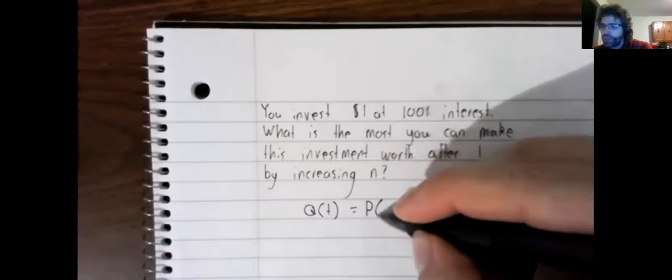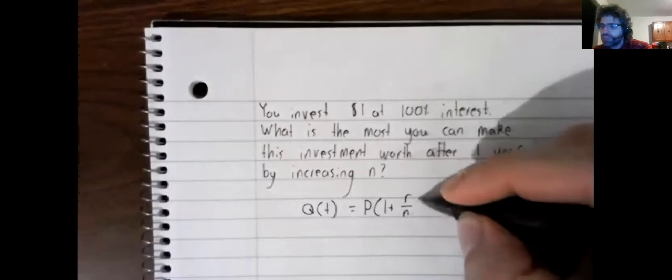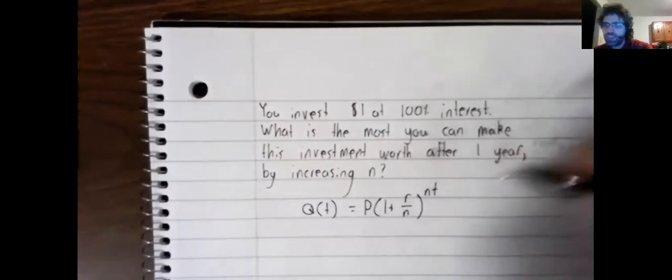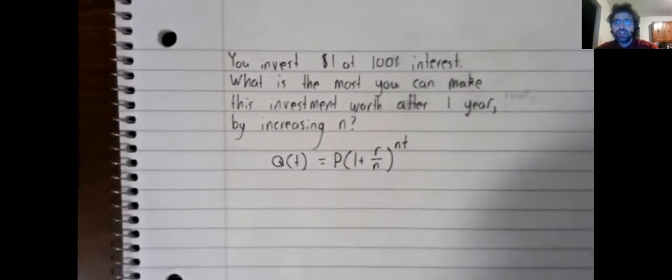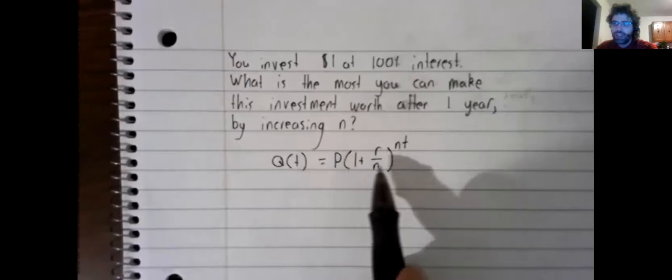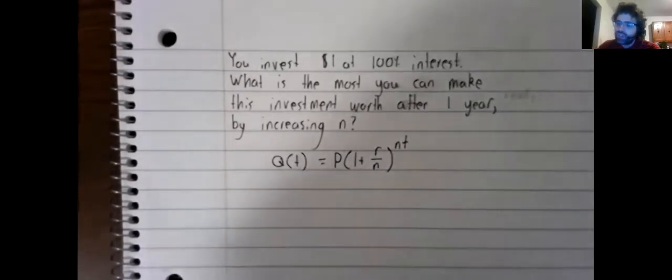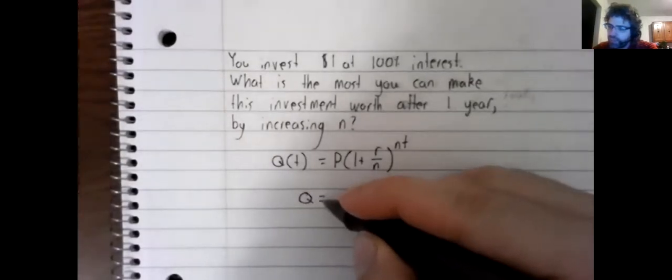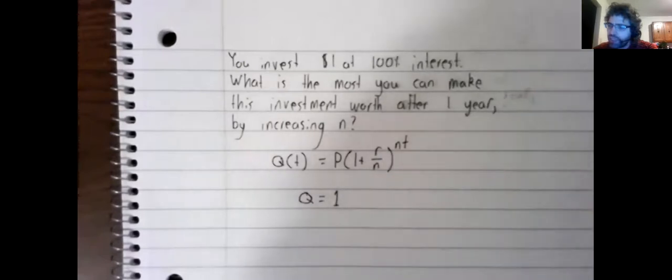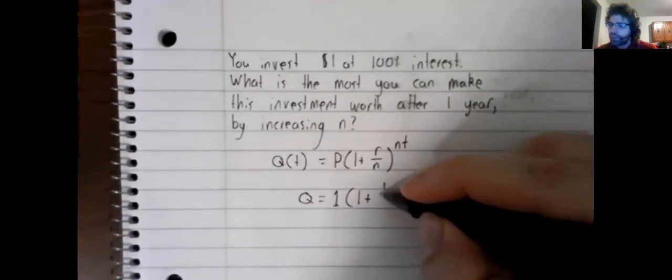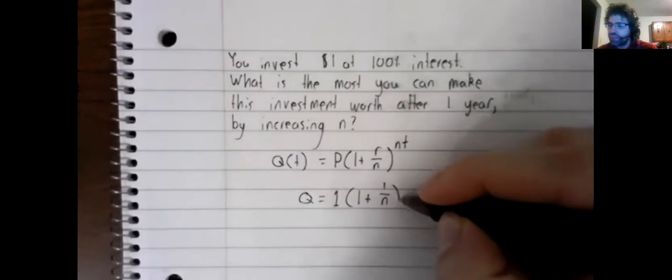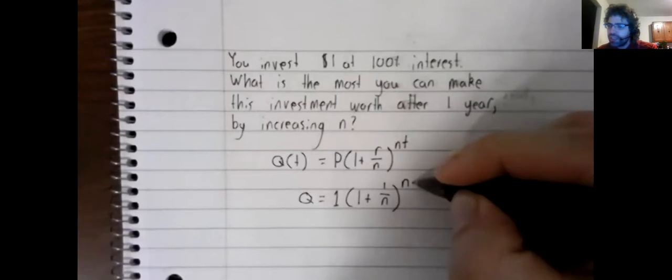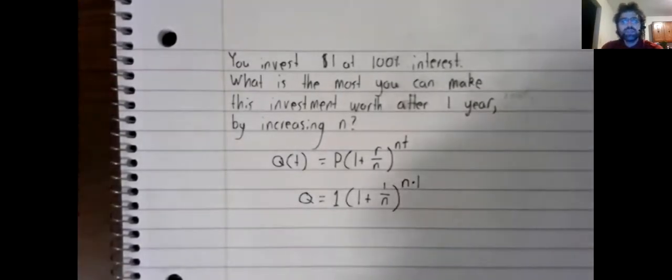I'm going to go over to Desmos in a bit. But let's start by looking at this, the formula for the value of an investment. The principle is fixed, it's $1. The interest rate is fixed. 100% written as a decimal is 1. And T is fixed. We're asking what happens after one year. So let's go to Desmos.